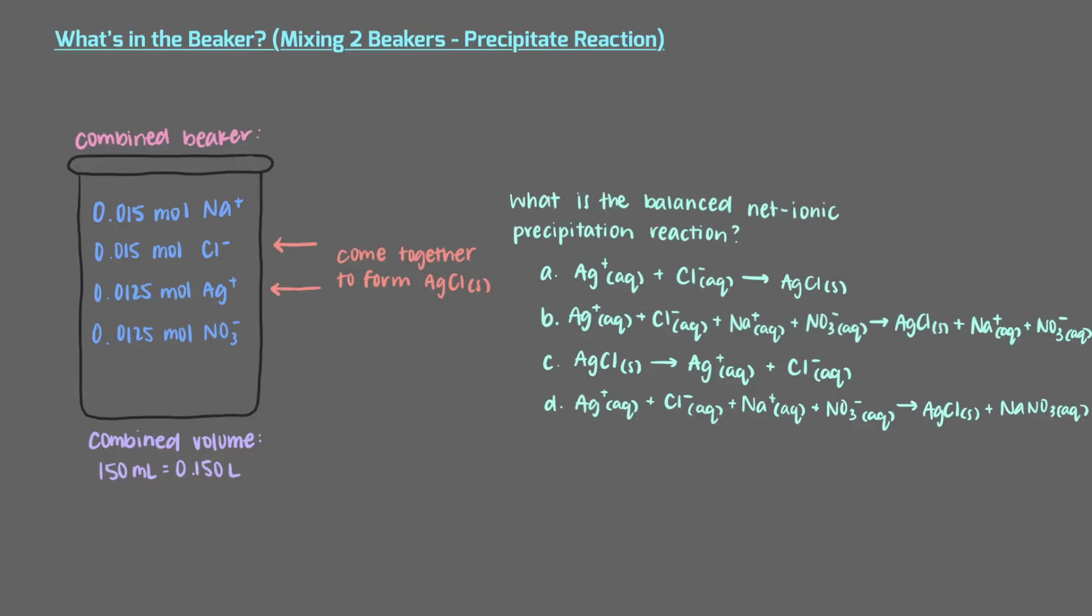Remember, the other ions in the beaker, sodium and nitrate, don't do anything. They're soluble, so they're never included in our chemical reaction. After all, reactions are there to tell you what's changing. The sodium and nitrate ions are not changing, so the correct answer is this one. Silver ions plus chloride ions react to make solid silver chloride.